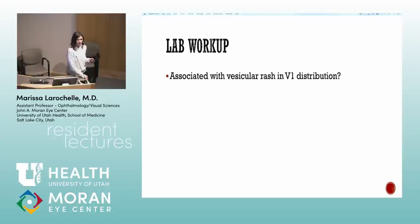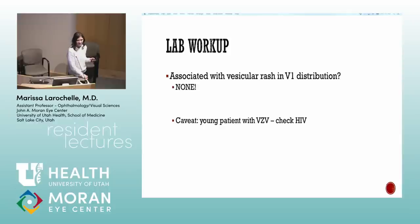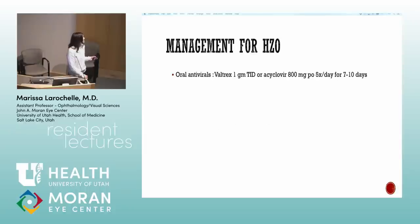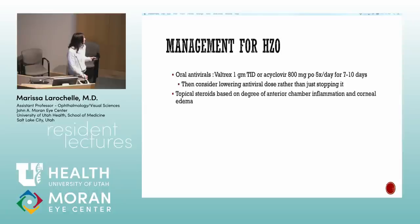Workup: if the patient has that rash, none needed — you know the diagnosis. Caveat: if a 25-year-old has zoster, check for HIV. You must dilate every patient with uveitis. Steroids are okay with herpetic disease as long as the patient is also covered with antivirals. If they have a dendrite, start with antivirals first.